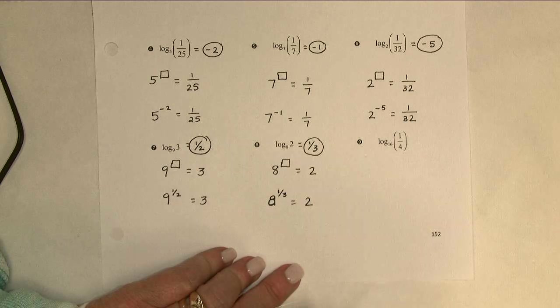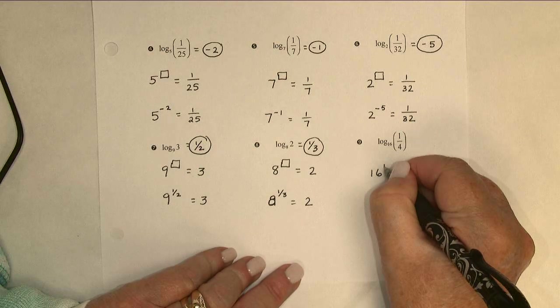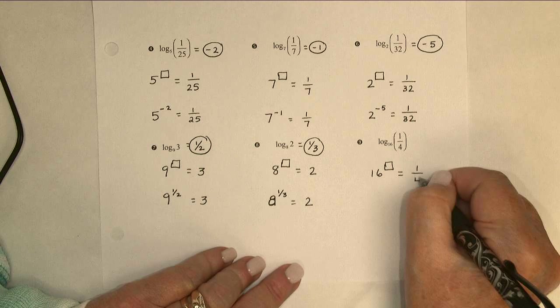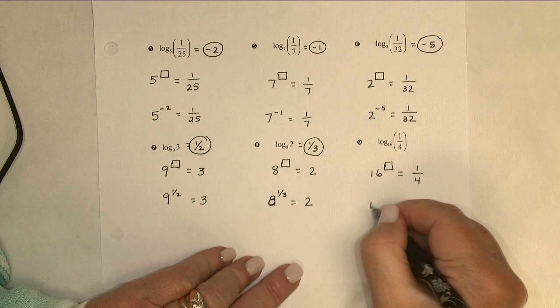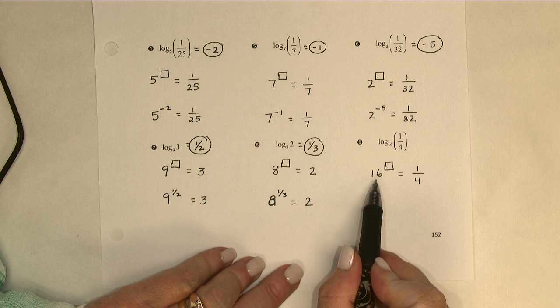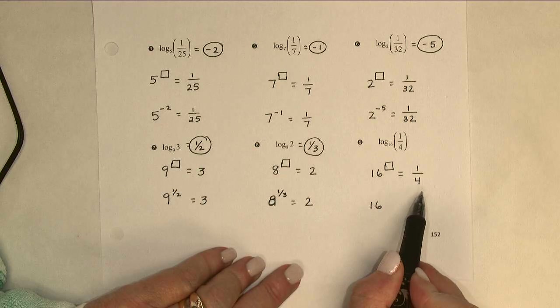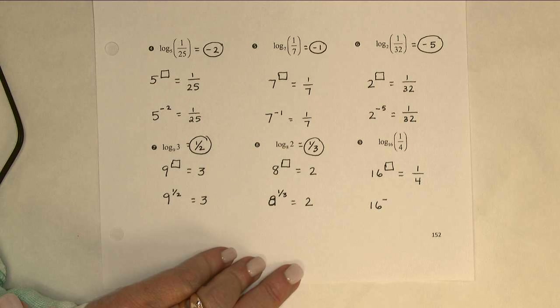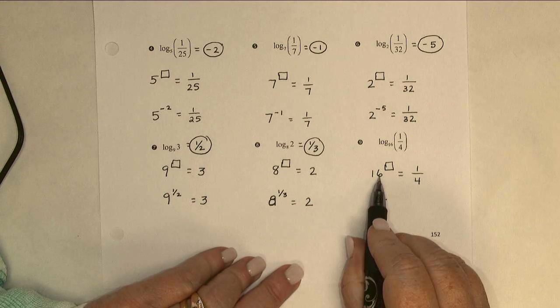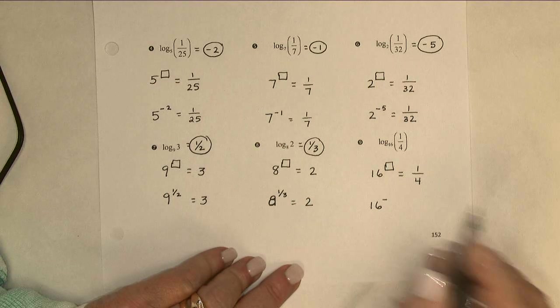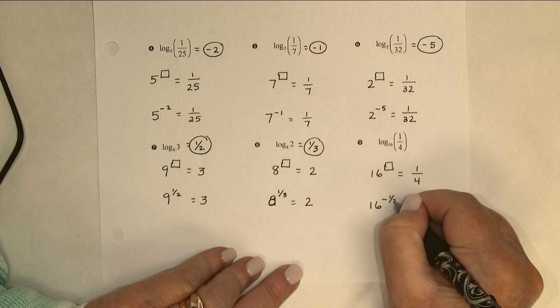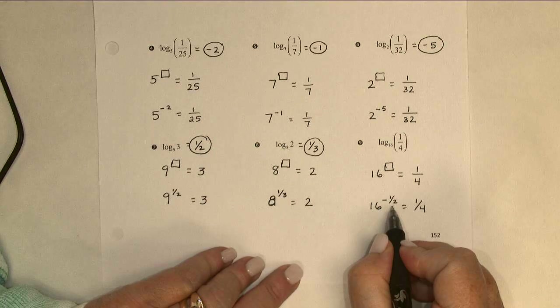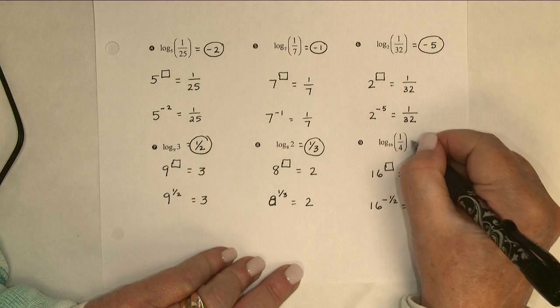And then one more example like this. 16 to what power gives me 1 fourth? First thing I'm going to notice here is it did move to the denominator. So, whatever it is, it's going to be a negative exponent. Next, I'm thinking that's a square root and square roots are 1 half power. So, my exponent is negative 1 half. That's the value of my logarithm.